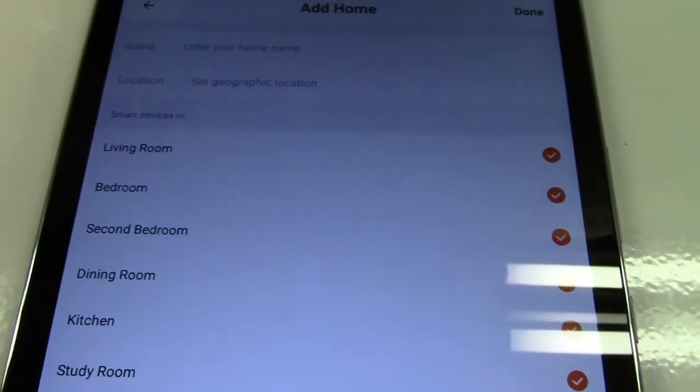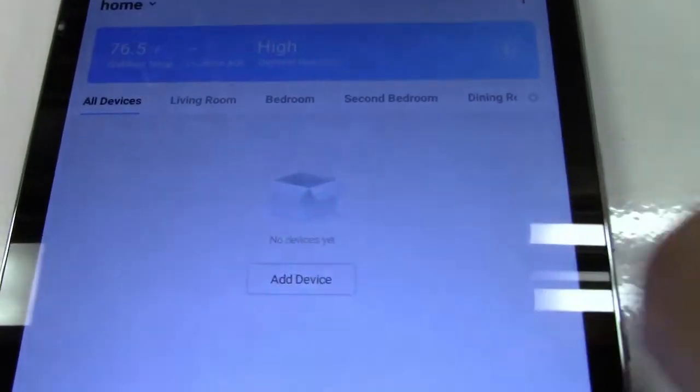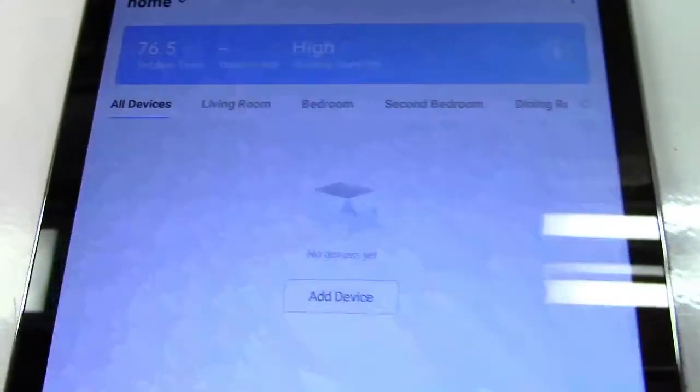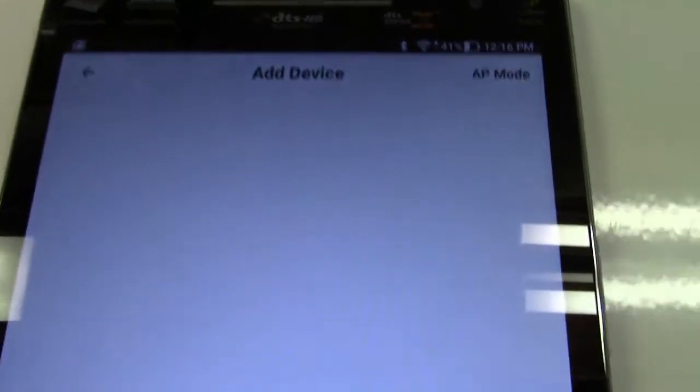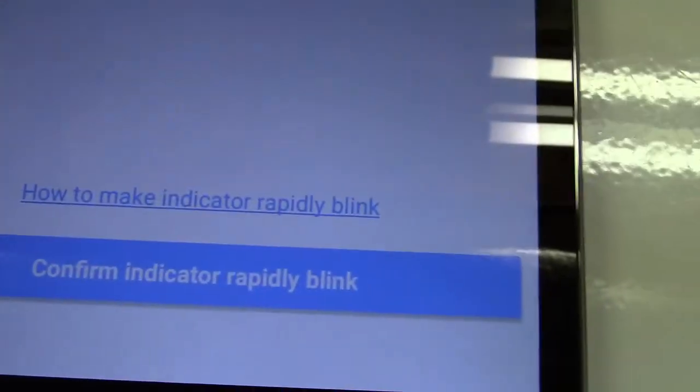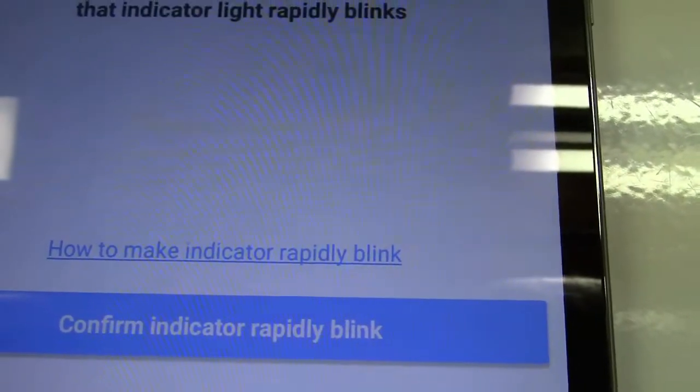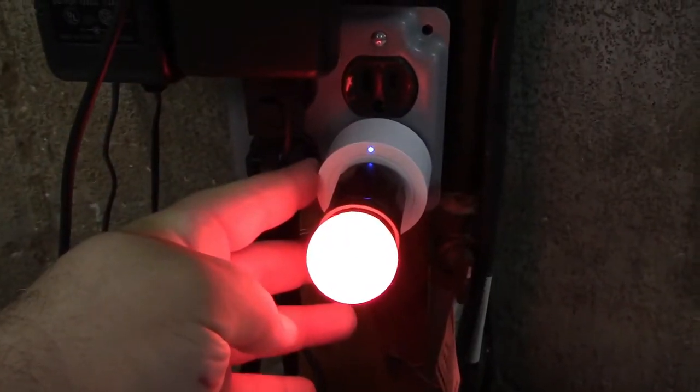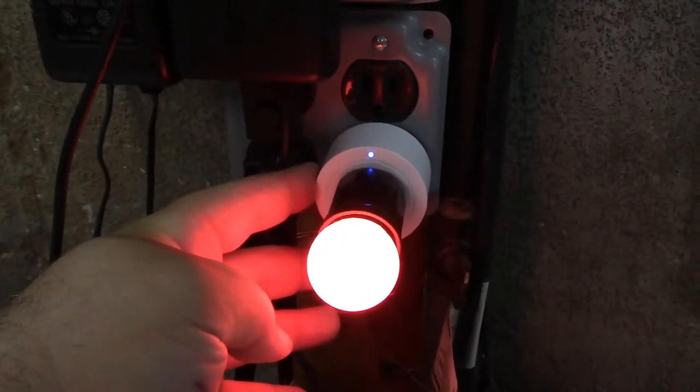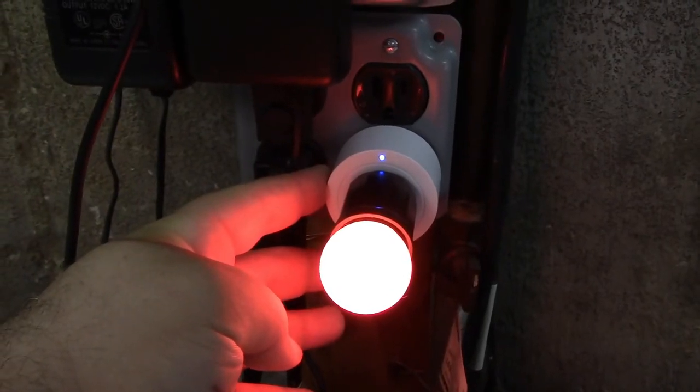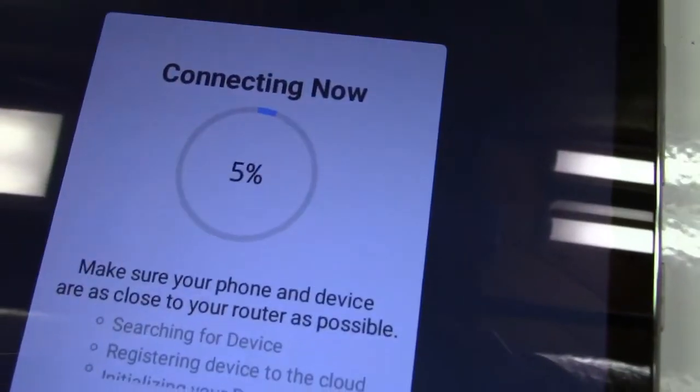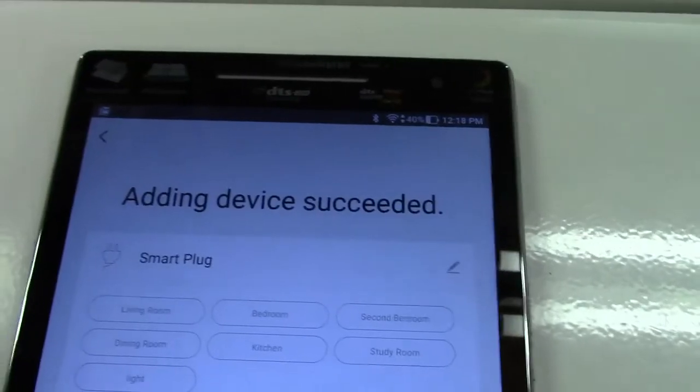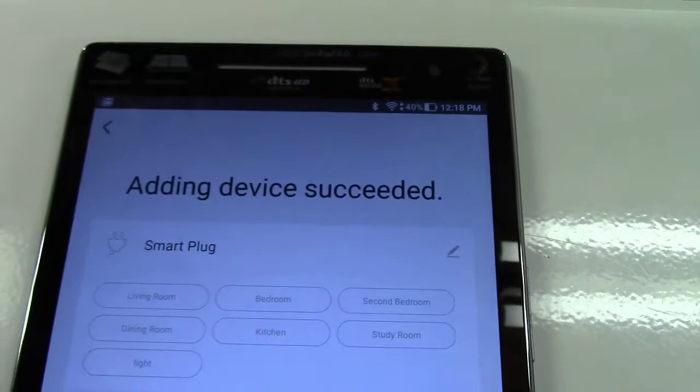Now we have to go ahead and hit add device. We'll select electrical outlet. It says confirm indicator rapidly blink. To do that we'll hold the button for five seconds. There it is and now it says that it's connecting. Adding device succeeded, hit done.